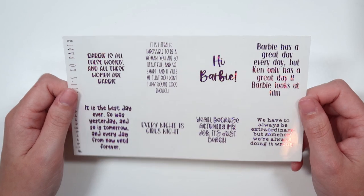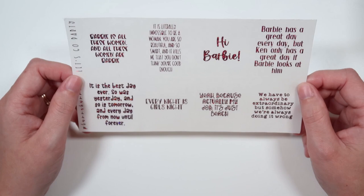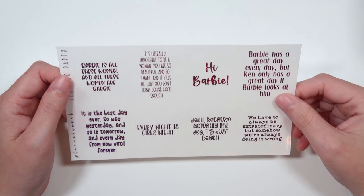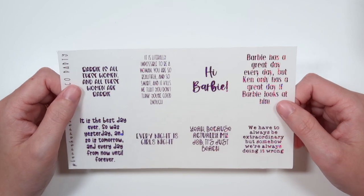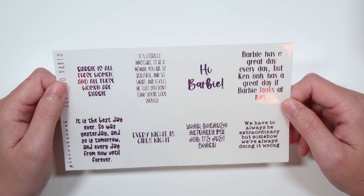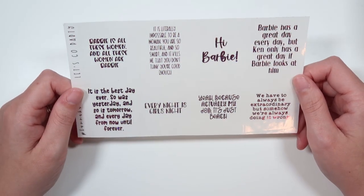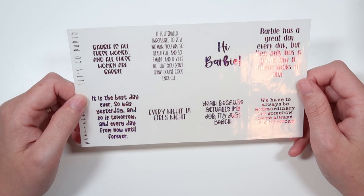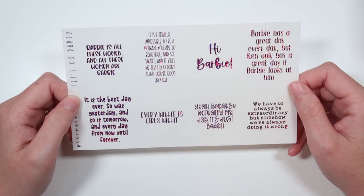And this sheet was requested by nobody but me but here we are. This is the new Let's Go Party quotes which are quotes from the Barbie movie and pixie magenta. And we have Barbie is all these women and all these women are Barbie. It is literally impossible to be a woman. You are so beautiful and smart and it kills me that you don't think you're good enough. Hi Barbie. Barbie has a great day every day but Ken only has a great day if Barbie looks at him. It is the best day ever. So is yesterday and so is tomorrow and every day from now until forever. Every night is girls' night. Yeah because actually my job it's just beach. And we have to always be extraordinary but somehow we're always doing it wrong. Love those.